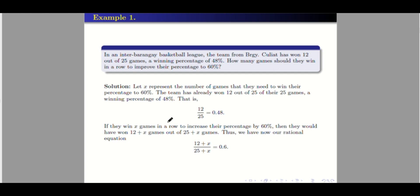So if they win 12 consecutive games, then in the denominator it should be 25 plus 12. In general, let X be the number of games that should be won by this team. Thus, we have now a rational equation: 12 plus X over 25 plus X equals 60%.